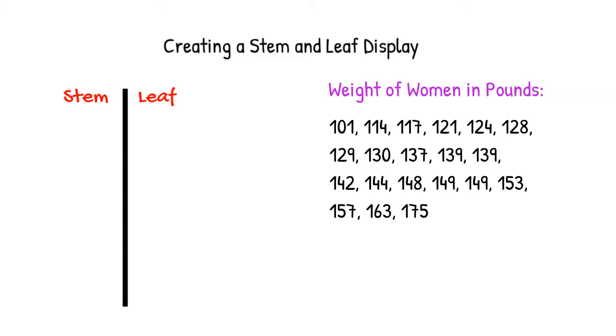For a stem and leaf display, we group the numbers into bins or categories determined by the first part of the number. Since our values all start with 1, we have the option to make that our first stem.